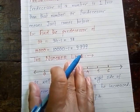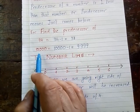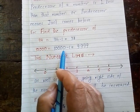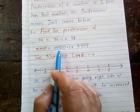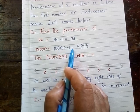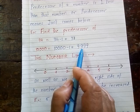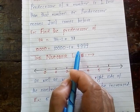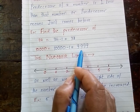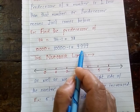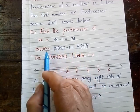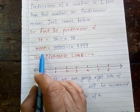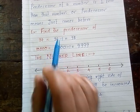Again, find the predecessor of 10,000. We will subtract 1 from 10,000, then we will get 9,999. So 9,999 is the predecessor of 10,000. This is the basic point of predecessor.